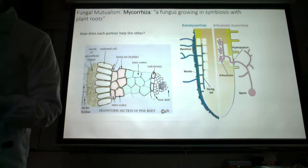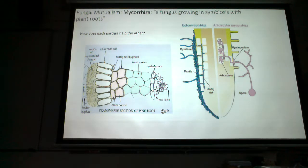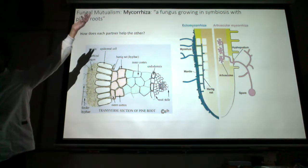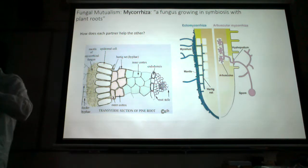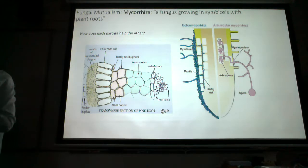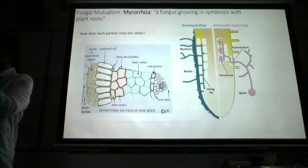The second example of mutualism involving fungi is the relationship between fungi and plants called mycorrhizae. Myco refers to fungus and rhizae refers to roots. Mycorrhizae are mutualistic relationships between fungi and plants — specifically, the fungi are living on the plant roots in the soil.